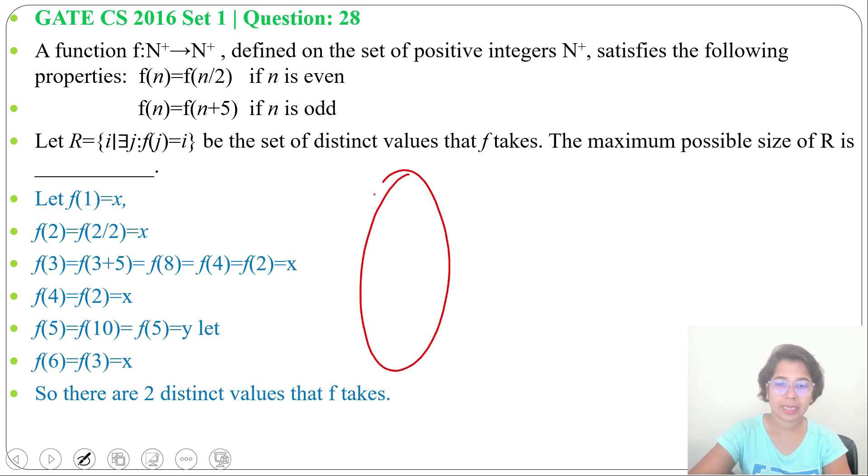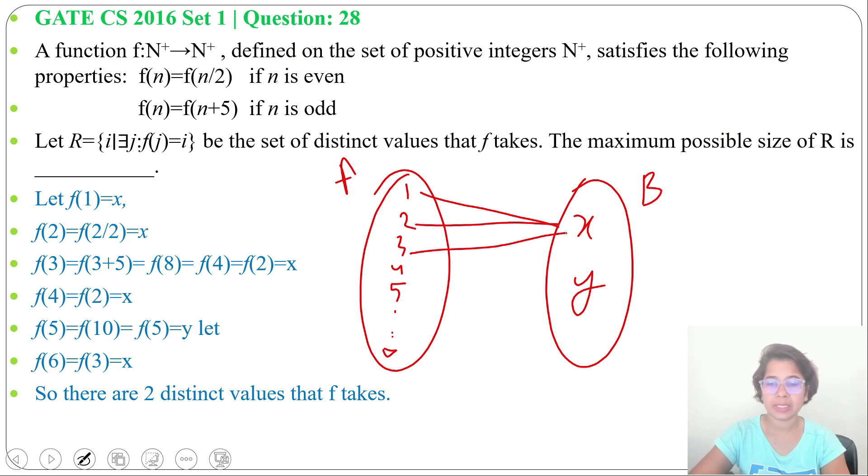We can take sets like this. Let this is x, y. Let A contain 1, 2, 3, 4, 5 up to infinite positive numbers. Now f(1) is x, f(2) is x, f(3) is x, f(4) is x, f(5) is y.